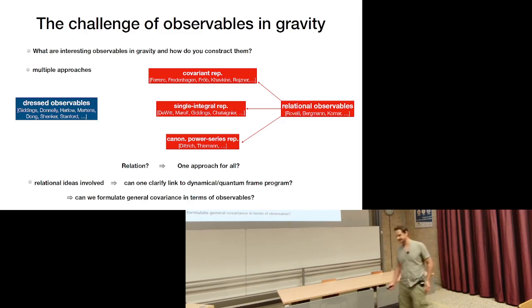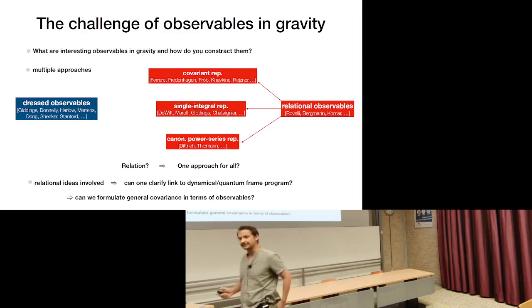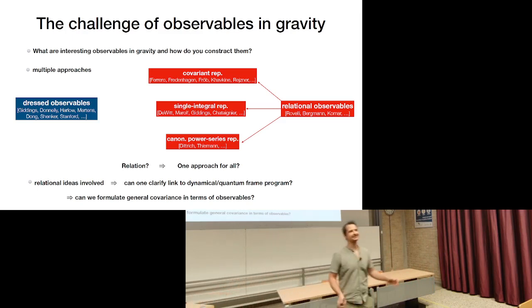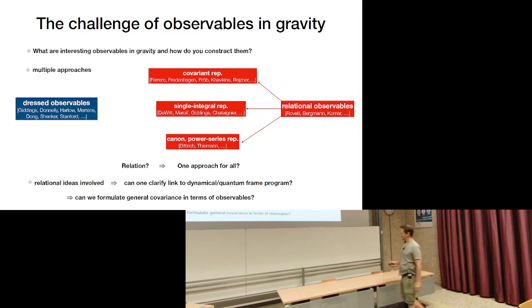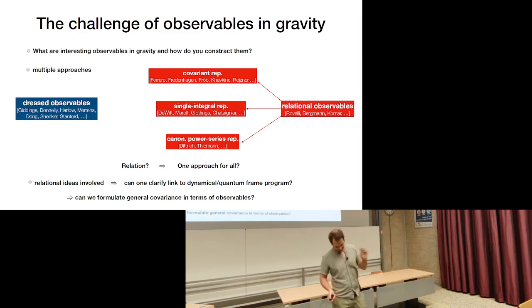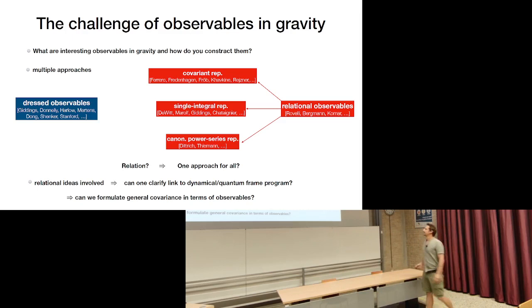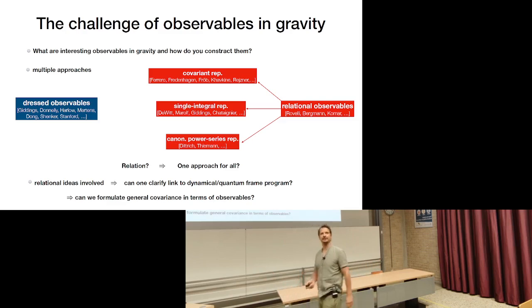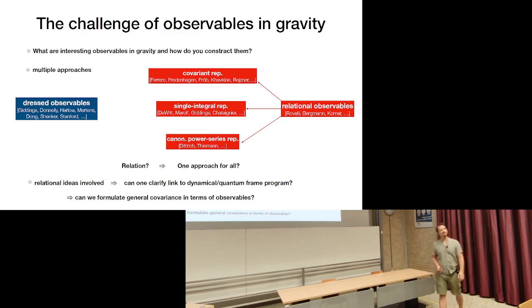One disclaimer: although this is about observables in quantum gravity, I will actually exclusively speak about classical gravitational theories. But it's worthwhile to understand them better. With these notions of observables, there are always relational ideas involved. The question is whether we can make the relation to dynamical frames more precise — understanding them as descriptions relative to dynamical reference frames — and whether we can connect this with dynamical frame covariance, translating between different frame perspectives and formulating general covariance in the language of dynamical reference frames.